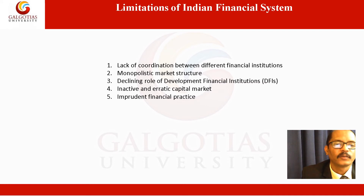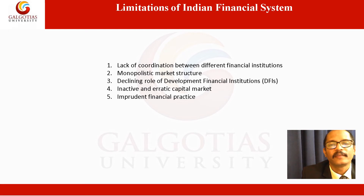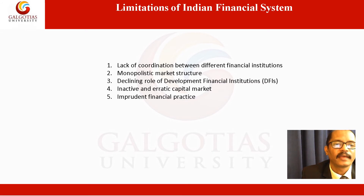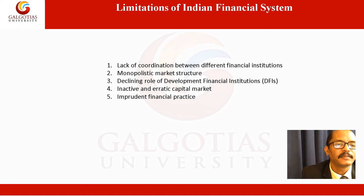The first weakness is the lack of coordination between different financial institutions. There are a large number of financial intermediaries. Most of the vital financial institutions are owned by the government, and at the same time, the government also has controlling authority over these institutions. In these circumstances, the problem of coordination arises. As there is a multiplicity of institutions in the Indian financial system, there is a lack of coordination in their working.